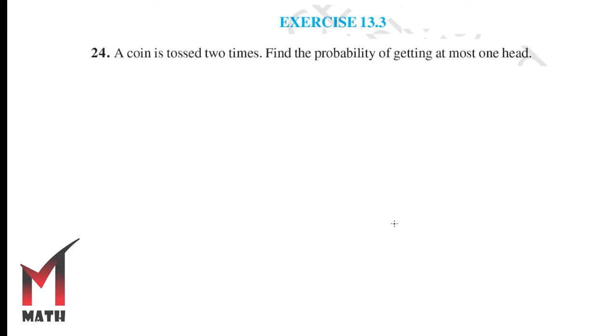Class 10, Example 13.3, Question number 24. A coin is tossed two times — find the probability of getting at most one head. Note the special distinction: at most versus at least.